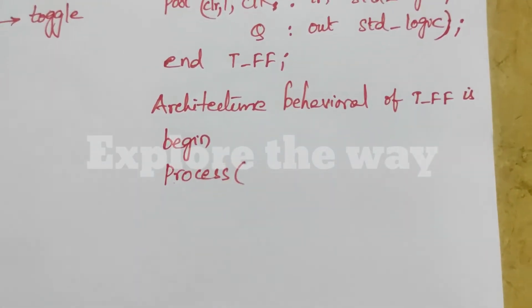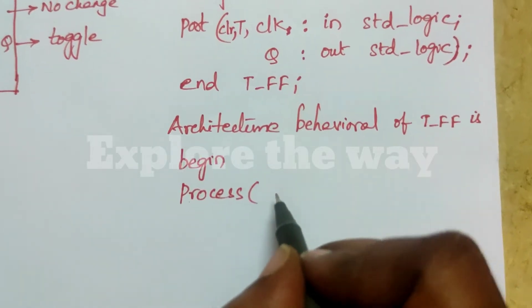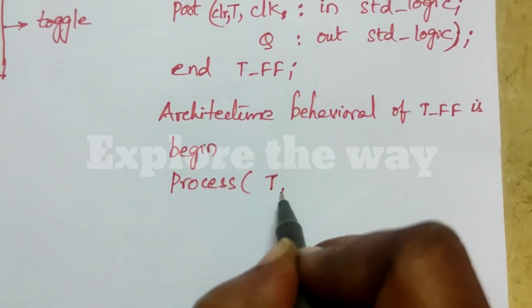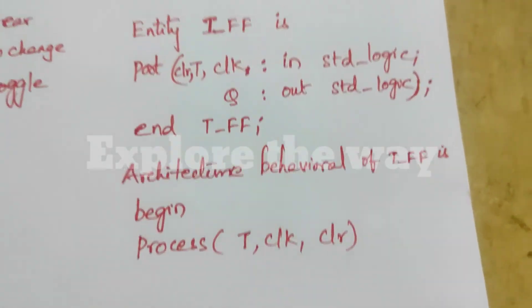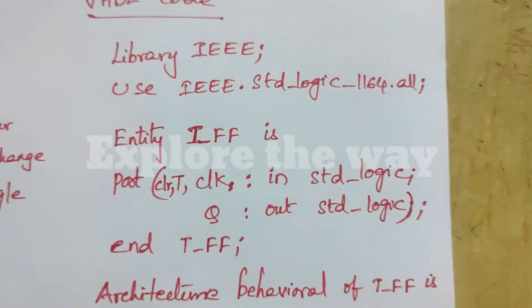That means, for which inputs the output will change. T clock clear. Here, we can declare one temporary signal.